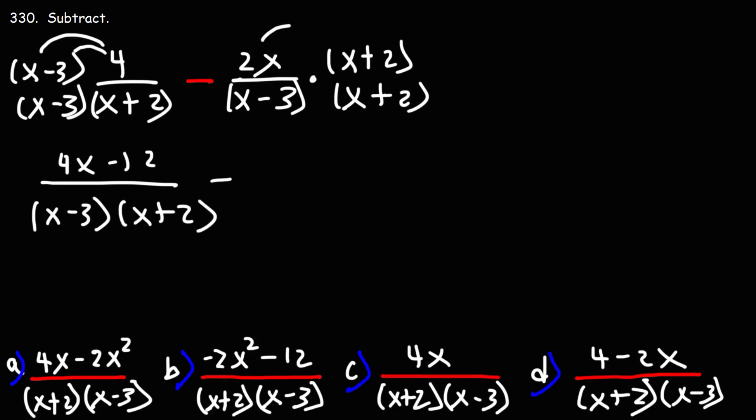And then it's minus 2x times x is 2x squared. 2x times 2 is 4x.